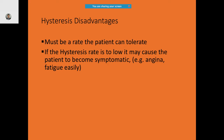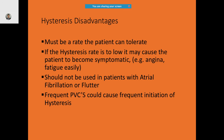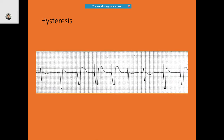Coming to the disadvantages: the hysteresis rate must be one the patient can tolerate. If the hysteresis rate is too low it may cause the patient to become symptomatic — for example angina or easy fatigue. It should not ideally be used in patients who have atrial fibrillation or flutter, and frequent PVCs could cause frequent initiation of hysteresis, which is why it is often misunderstood and misinterpreted.